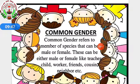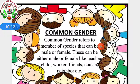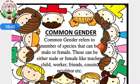Next, common gender. Common gender refers to a member of a species that can be male or female. These can be either male or female. Like 'teacher' — a teacher can be male or female. 'Child' — a child can be a boy or a girl. 'Worker' — a worker can be a lady or a gentleman. 'Friend', 'cousin', 'neighbor' — all can be boy or girl. Common gender means these words don't refer specifically to male or female.